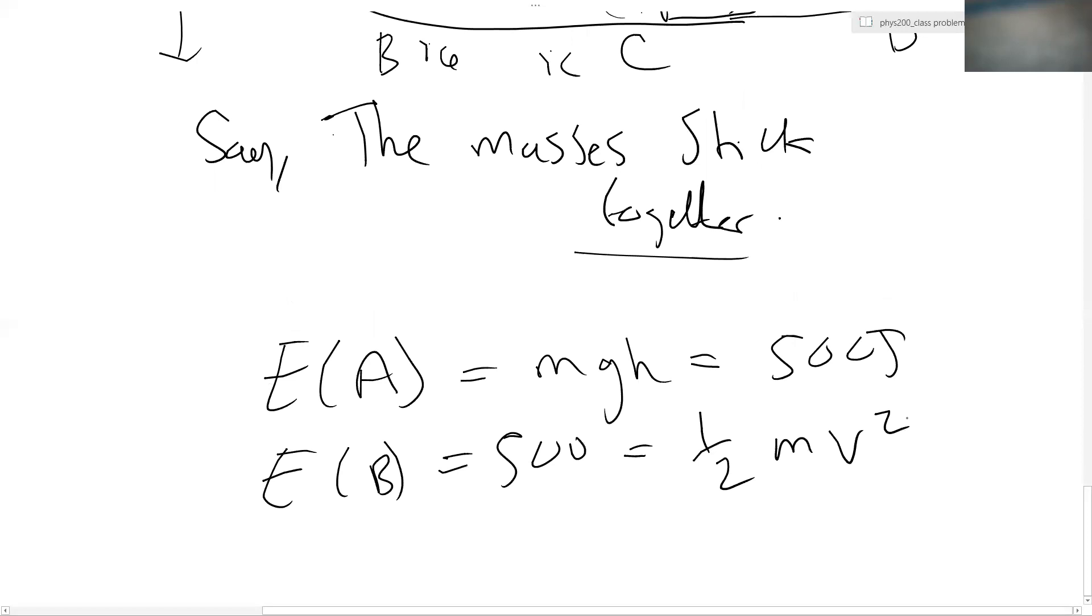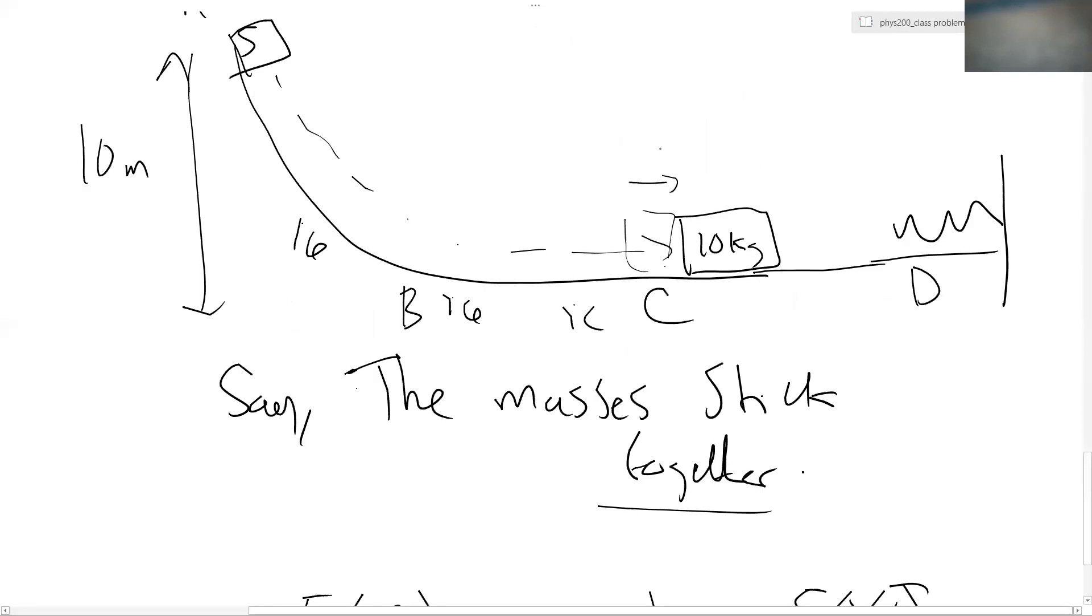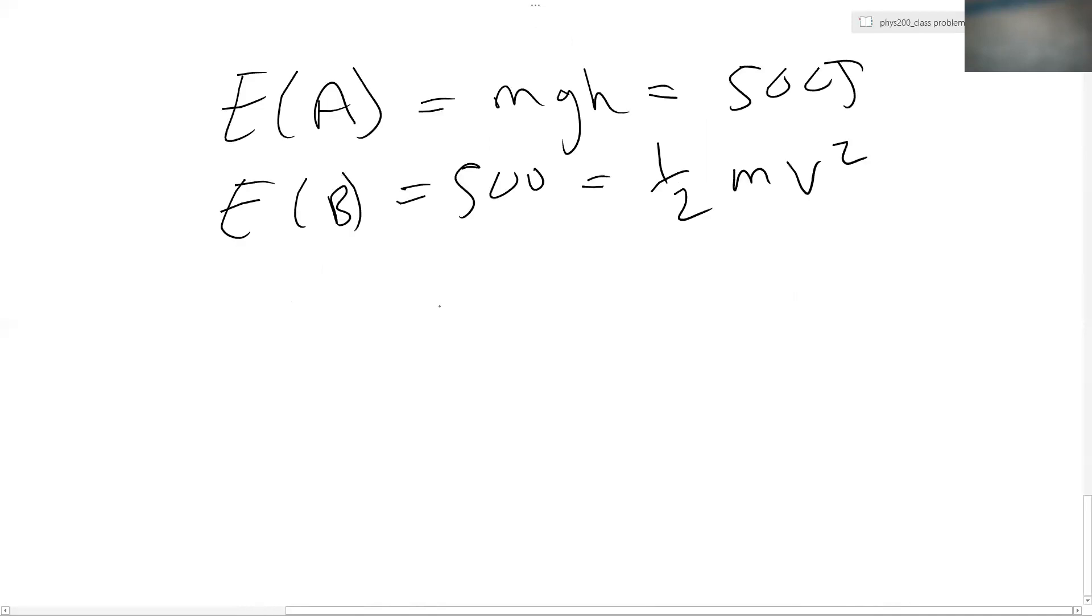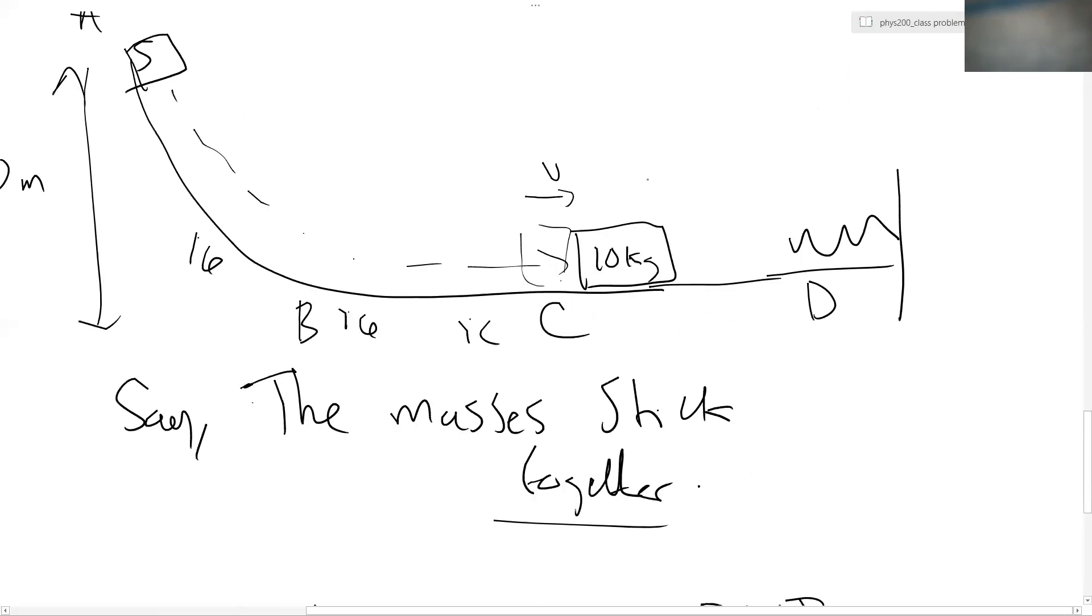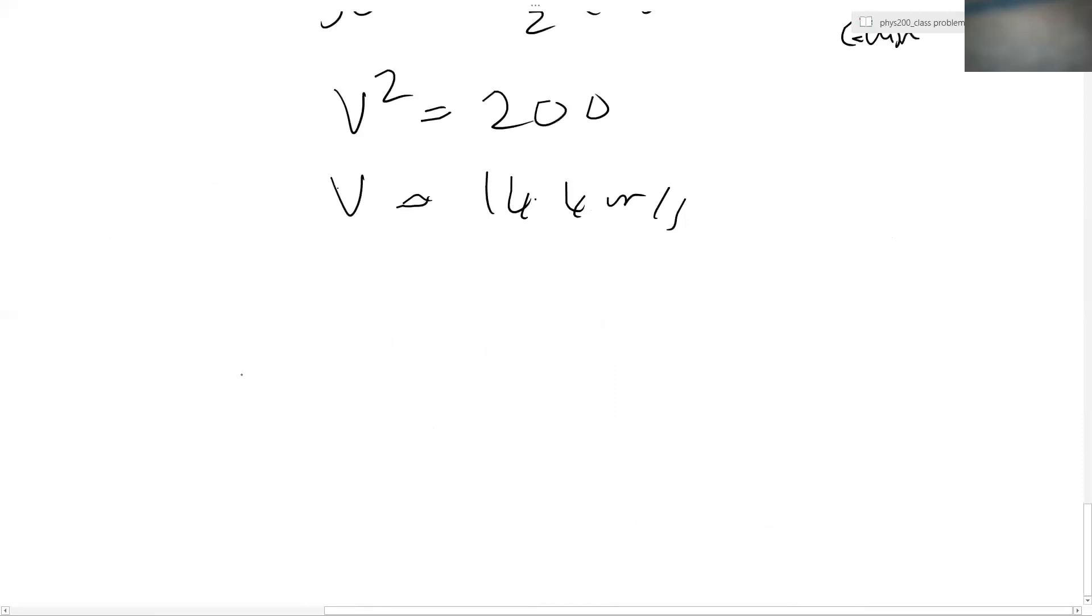So as we said before, you could write that as a half MV squared. I want to find out what the velocity is at B. I want to find that velocity just before it hits the 10 kilogram mass. So I can actually solve for that because I have 500 equals one half times by five times by V squared, where this is a velocity just before it hits the other mass, just before the collision. So let's solve for, if we rearrange that, we get V squared is equal to 200, which means that V is about 14.4 meters per second.